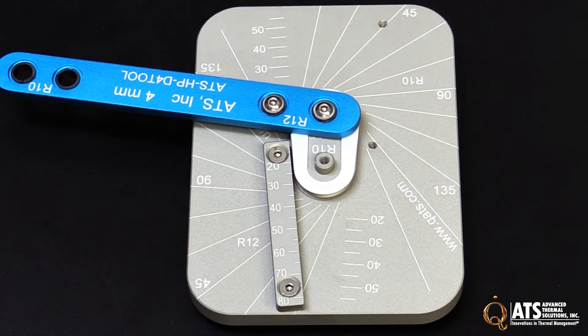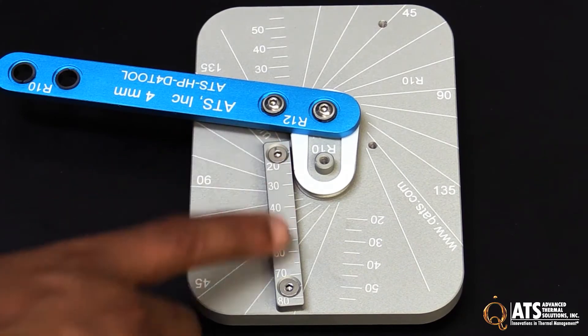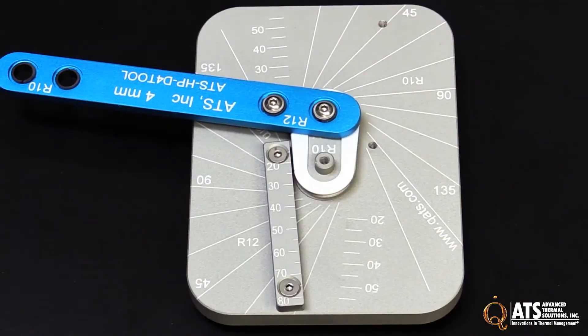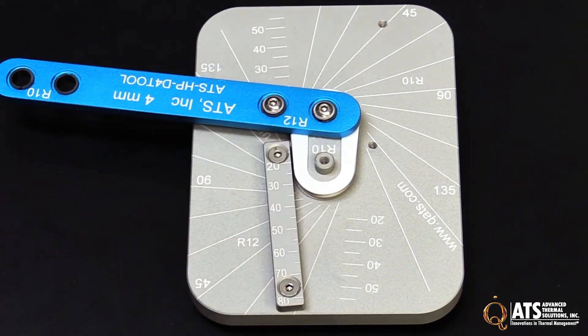If you wanted to change it, you'd simply remove these screws, turn this around, put it on the other side, and flip the handle around. Then you can use the R10 radius.